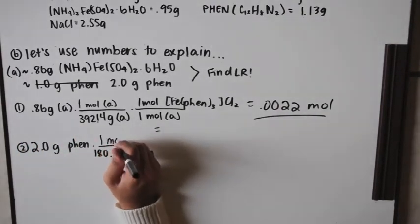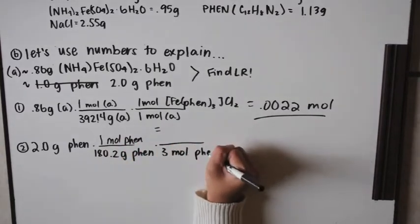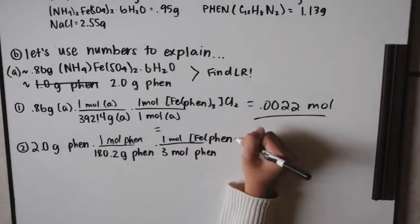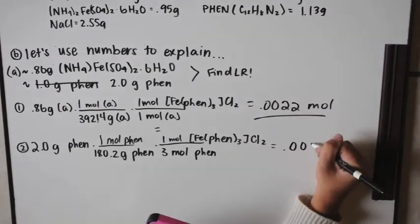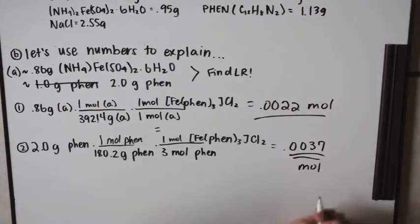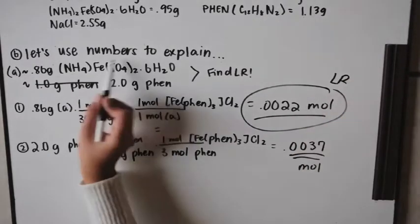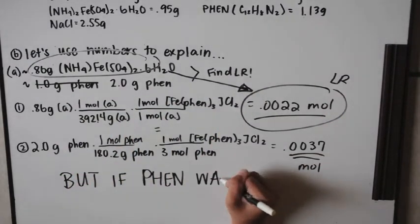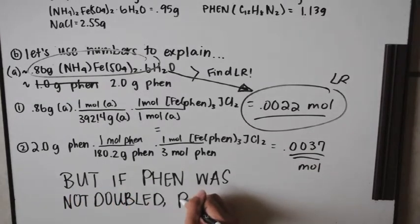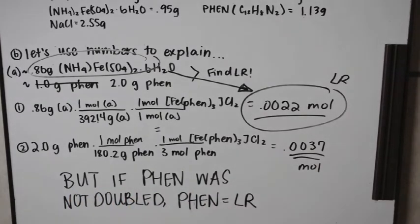Since ferrous ammonium sulfate produces fewer moles of product (0.0022 vs. 0.0037), the limiting reactant is now ferrous ammonium sulfate, not phen. This would change your theoretical yield and percent yield. If you hadn't doubled the phen, phen would still be the limiting reactant.